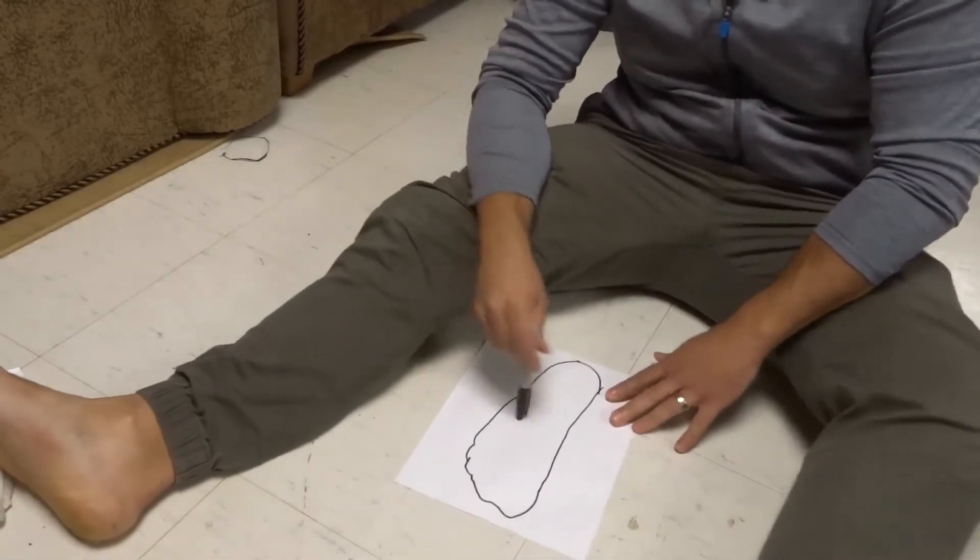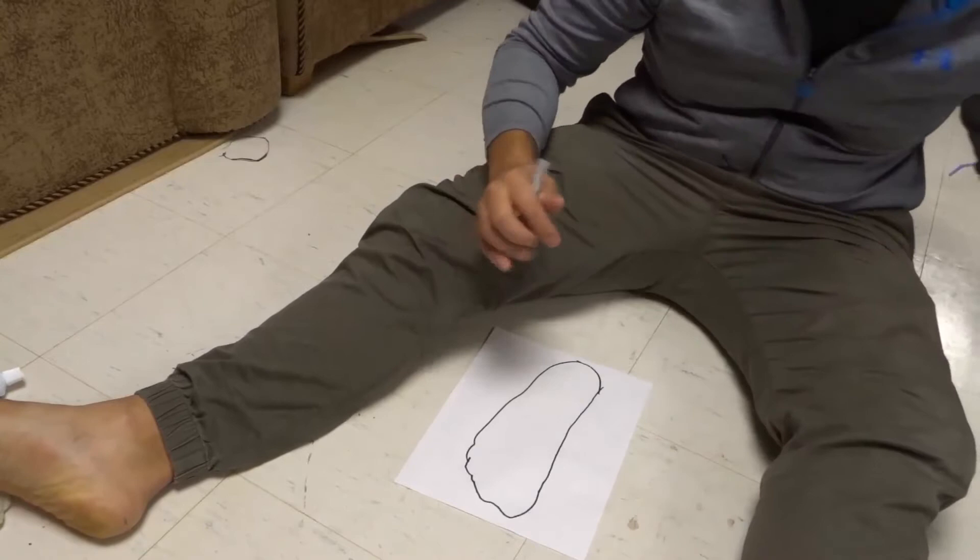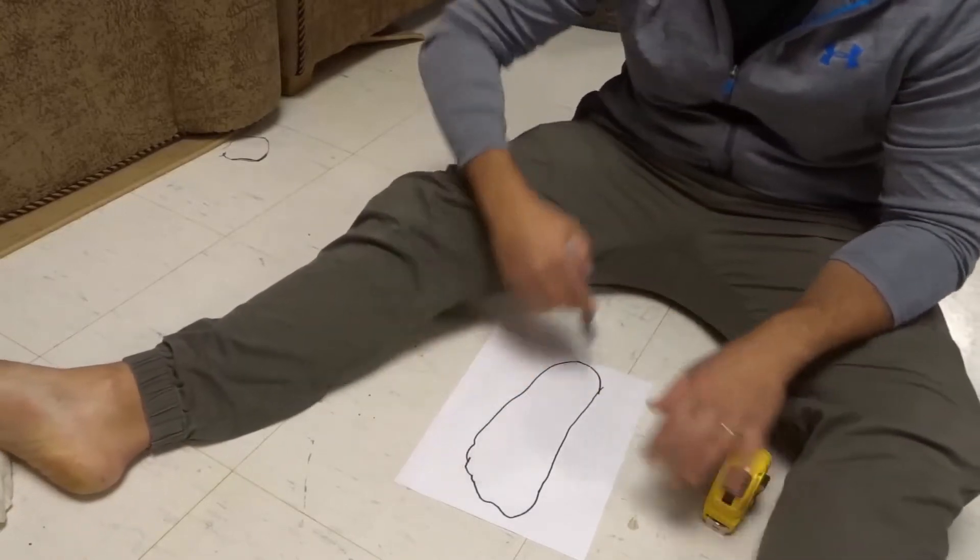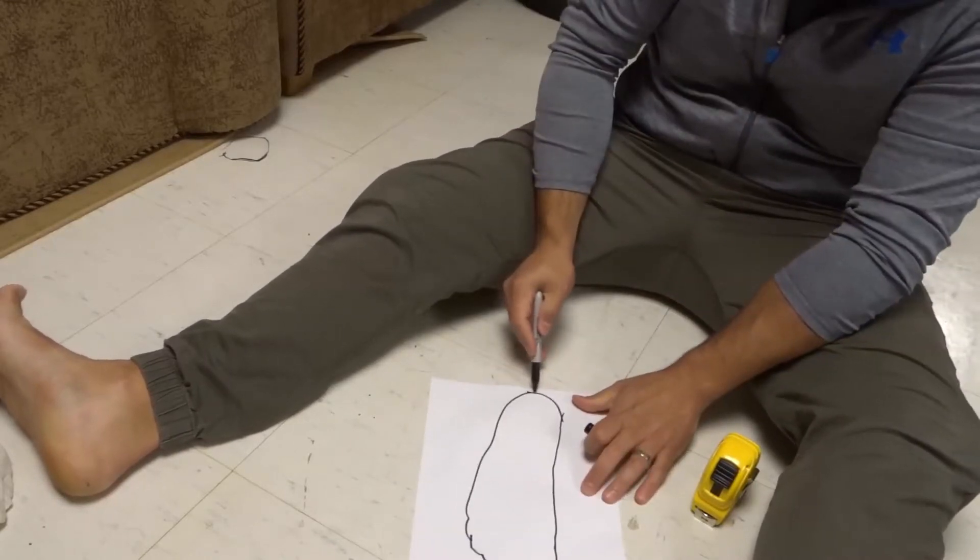Now what you want to do is take this tracing right here and we're going to measure it. So the first thing that you want to do is measure the length of your foot. So you want to measure from the heel, which would be right over here.